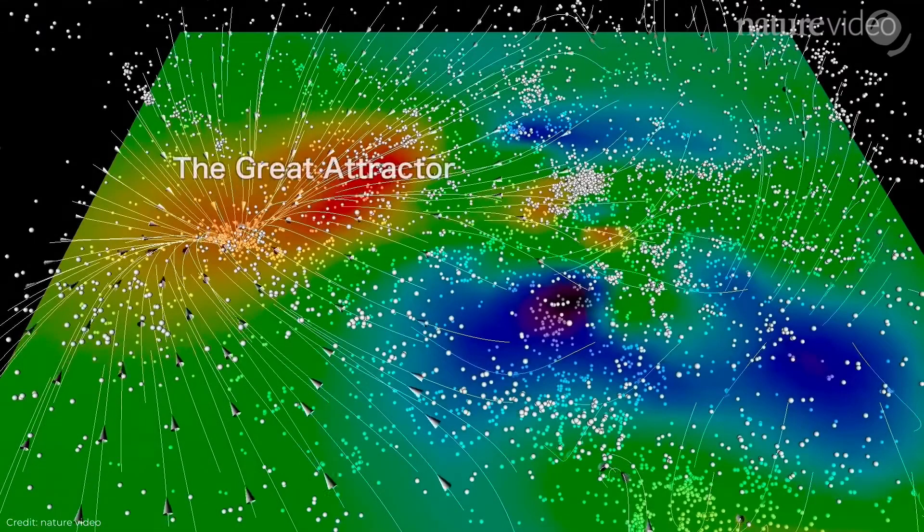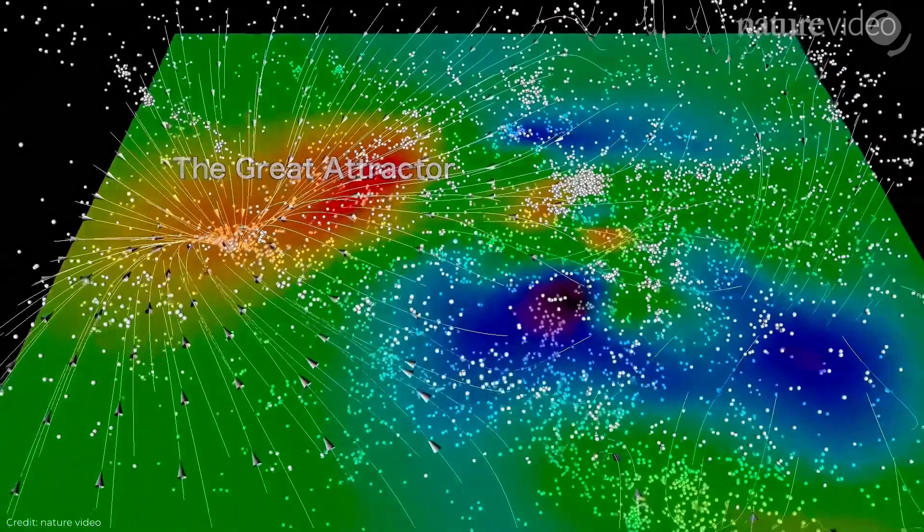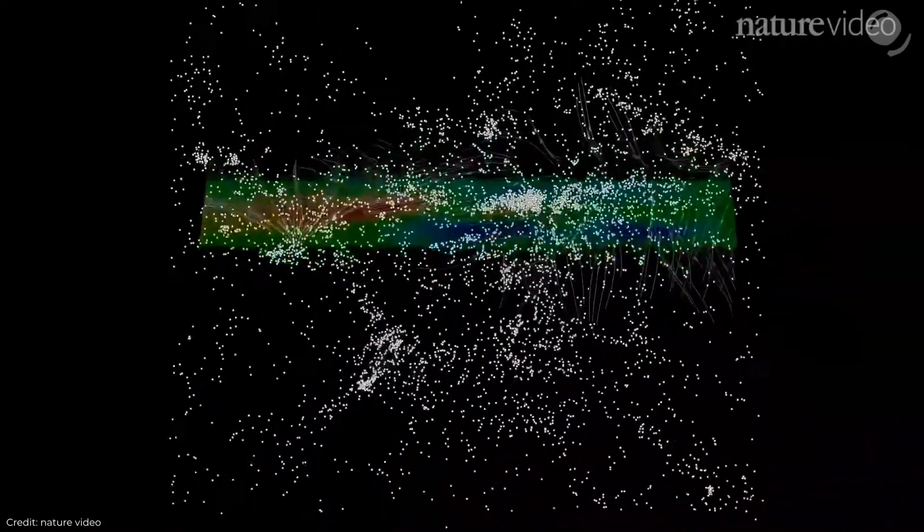Some of you might say, wait a minute, and what about the great attractor? How is it different, and why is it not that controversial? I'll get back to that. First, it may not be very intuitive how a large number of galaxies can move in one specific direction.